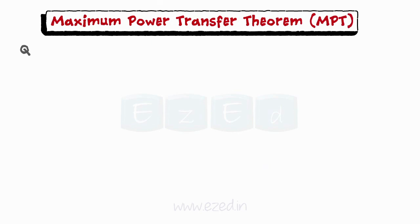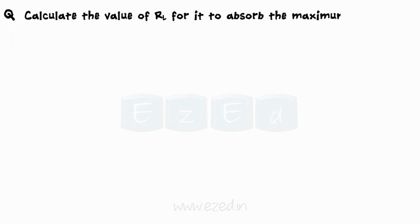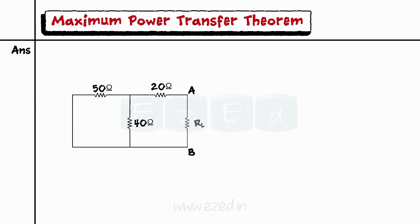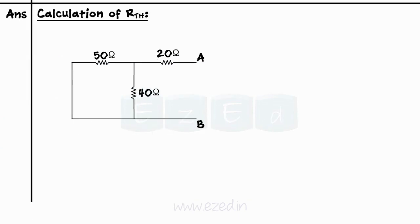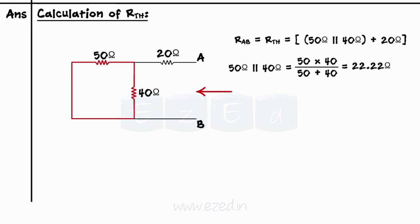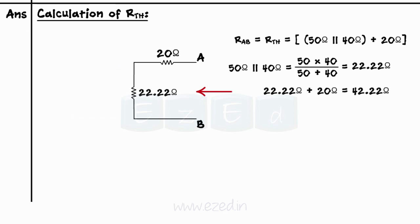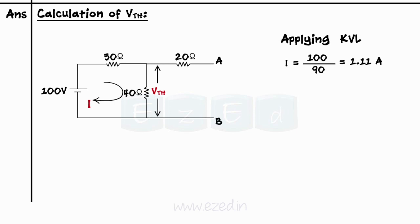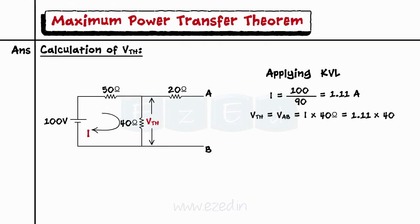Consider an example: calculate the value of RL for it to absorb maximum power and find the maximum power in the circuit. Remove the load resistance and calculate Thevenin's resistance as seen from branch AB. Rth is calculated as 50 Ohms in parallel with 40 Ohms, with their equivalent in series with 20 Ohms, giving Rth equals 42.22 Ohms. Applying KVL, we get I equals 1.11 Amperes. Vth is the voltage drop across the 40 Ohms resistor, so Vth equals I times 40 equals 44.44 Volts.